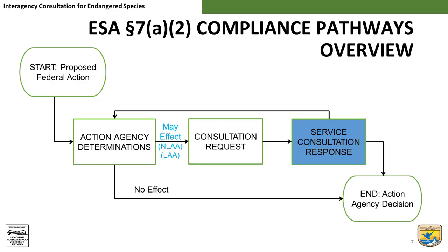Assuming no additional information is needed, then there are two other responses the services can provide. After reviewing the proposed action, the status of the listed species and designated critical habitat, the effects of the proposed action, and the cumulative effects, the services will reach a determination. One determination could be may affect, not likely to adversely affect, which is often referred to as NLAA. The other is may affect, likely to adversely affect, which is often referred to as LAA.